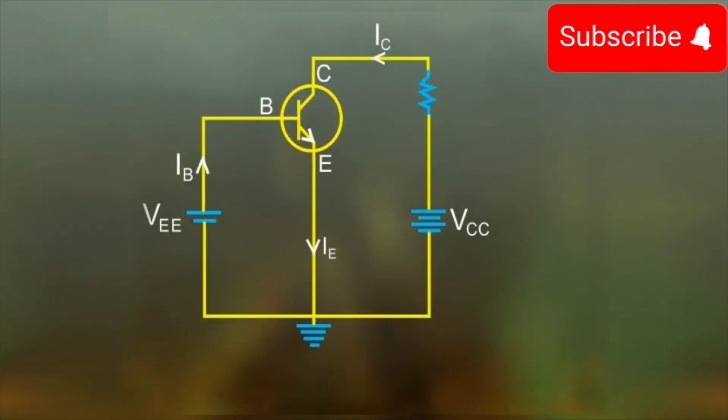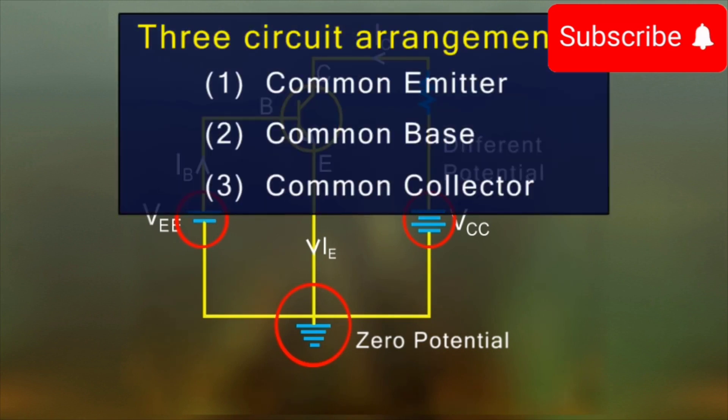In addition, one of the terminals of the transistor is kept at zero potential and the other two are given different potentials. This way, three possible circuit arrangements can be made. Of these, we will not consider the common collector.